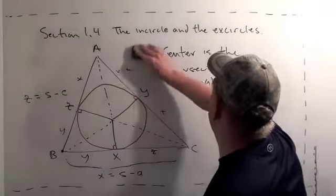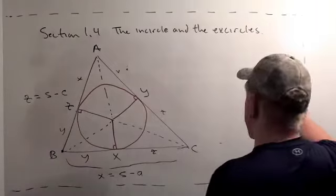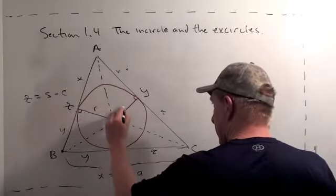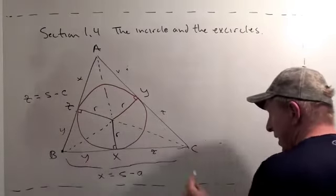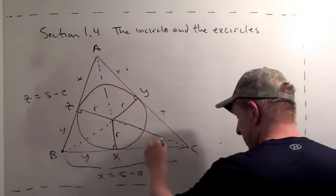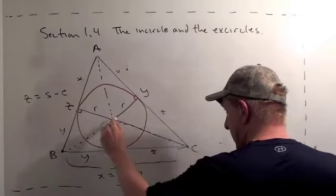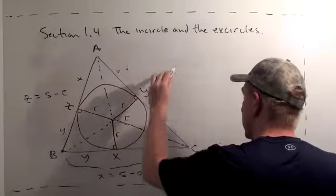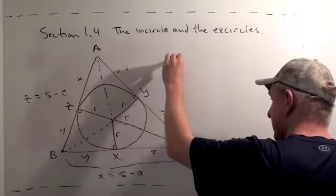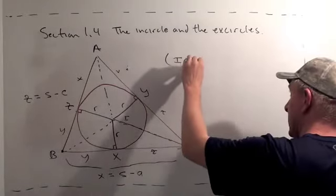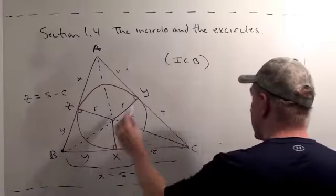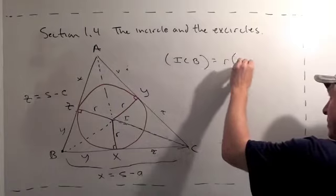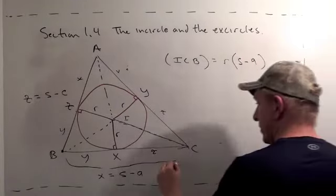Well, we're going to develop another formula for the area of a triangle. And you'll notice that we have the radius of the inscribed circle there. And if we look at this triangle, C, what does the book call that point? Call it I. The area of triangle ICB equals the radius of the inscribed circle times S minus A.